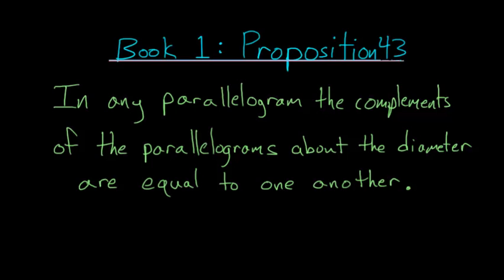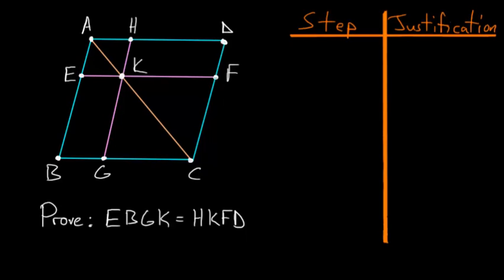For Book 1, Proposition 43 of Euclid's Elements: in any parallelogram, the complements of the parallelograms about the diameter are equal to one another. If we start with some parallelogram ABCD and bisect it with the diameter AC, we form four smaller parallelograms inside. What we're trying to show is that this parallelogram here and this parallelogram here are equal to each other — these are known as the complements of the parallelogram about the diameter.